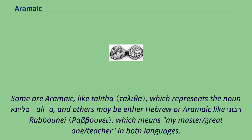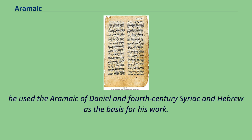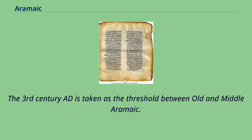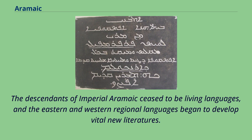The 3rd century AD is taken as the threshold between Old and Middle Aramaic. During that century, the nature of the various Aramaic languages and dialects began to change. The descendants of Imperial Aramaic ceased to be living languages, and the Eastern and Western regional languages began to develop vital new literatures. Only two of the Old Eastern Aramaic languages continued into this period: in the north, Old Syriac transitioned into Middle Syriac, and in the south, Jewish Old Babylonian became Jewish Middle Babylonian. The post-Achaemenid Sassanid dialect became the background of the new Mandaic language.